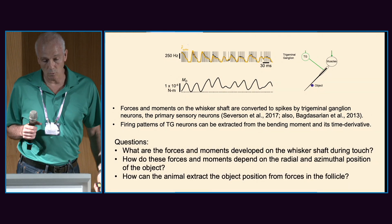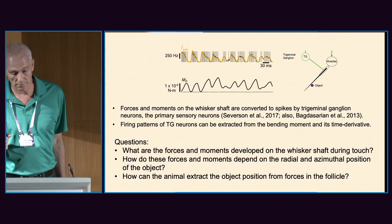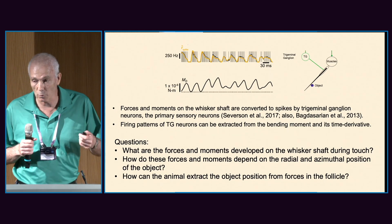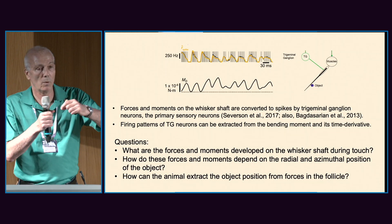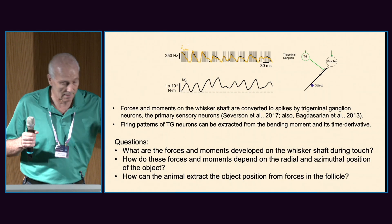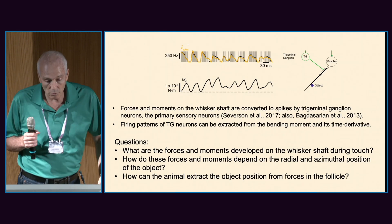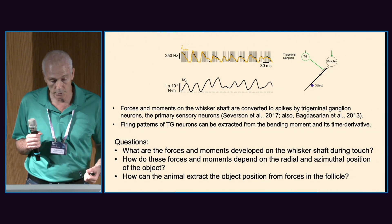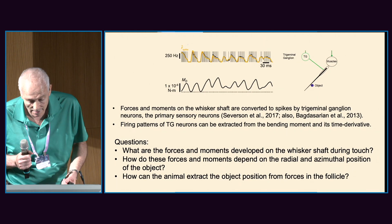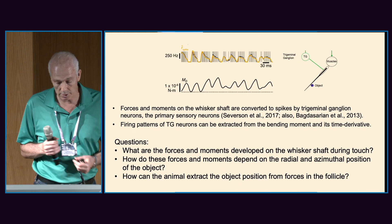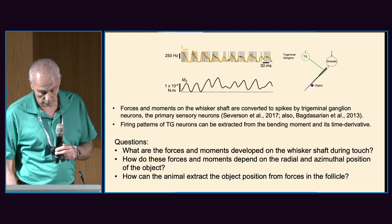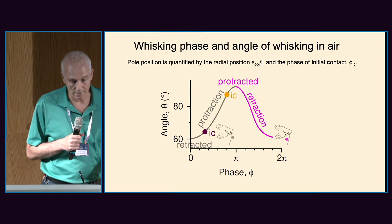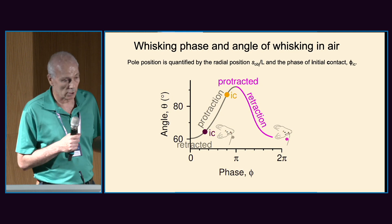This leads us to several questions. First, what are the forces and moments developed on the whisker shaft during touch, with the whisker embedded in the motor plant? Second, how do these forces and moments depend on the radial and azimuthal position of the object? And third, how can the animal extract the object position from forces in the follicle?